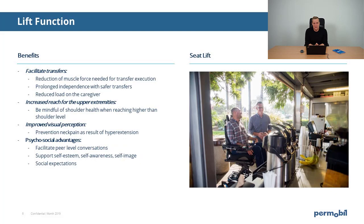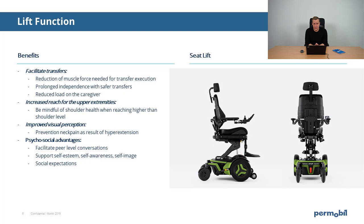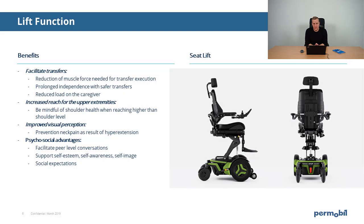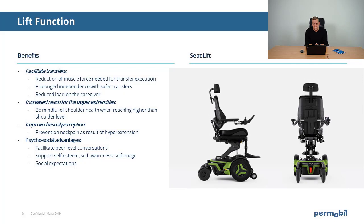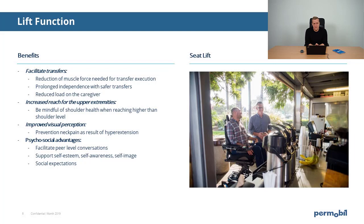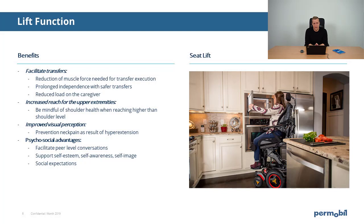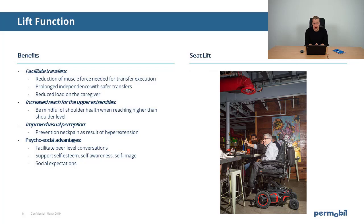The next PowerSeat function is the lift function. The lift function can facilitate transfers. It brings users into a higher position where they need less muscle force to achieve a vertical or standing position. This means users can independently execute transfers for longer, or it reduces the load for caregivers. The lift function also increases the functional reach for the user. Always be mindful that reaching should be done in a frontal plane to reduce the risk for repetitive strain injuries.